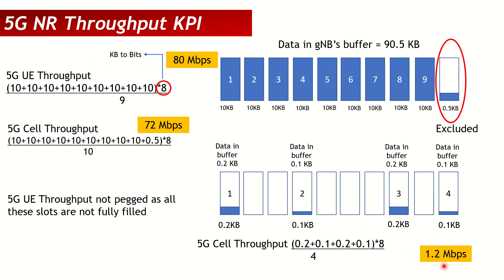1.2 Mbps is a very low value. If you used nearly-empty slots to calculate UE throughput on a large 5G channel, the result would be unrealistically low and impractical. That's why 3GPP specifies that UE throughput is only calculated on slots that are actually full — slots utilizing the full 5G channel bandwidth — so you get a realistic view of radio capacity. This is why UE throughput is typically higher than cell throughput in lightly loaded scenarios.